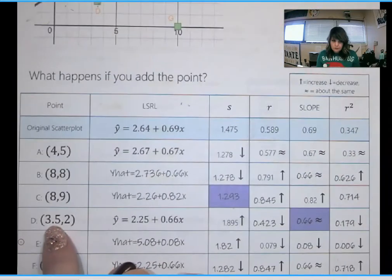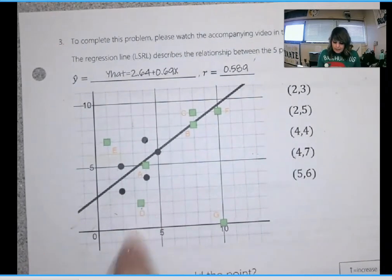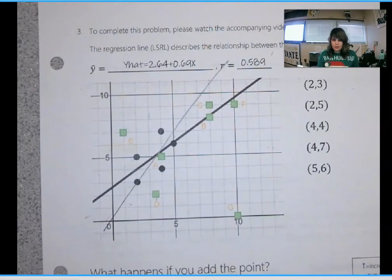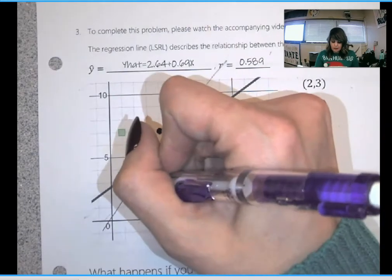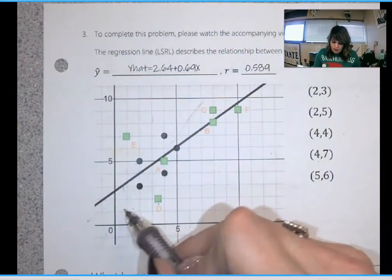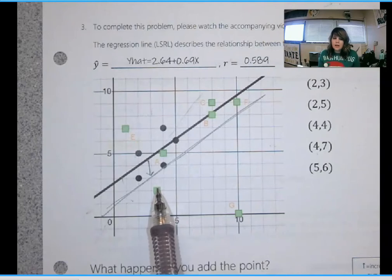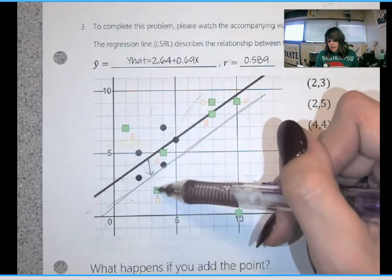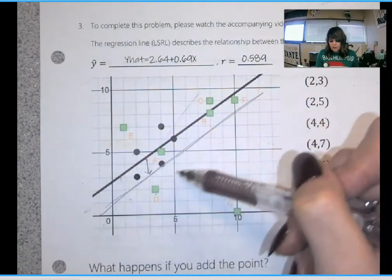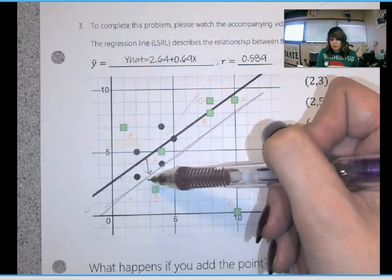So S really decreased because it is closer to the line than some of the original scatter plot points. So that is one of the mistakes that I made. On D, I got the slope wrong. So what I was thinking for D was when you add this point, it was going to make your scatter plot steeper. So I thought slope was going to increase because this point was like going to pull that line toward it.